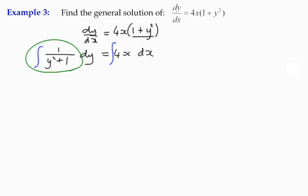So we've got 1 over x squared plus a squared is going to be 1 over a times the inverse tan of x over a. So it's about being able to identify these things. So that's going to give us, a is 1 in this case. So we've got the inverse tan of y on the left-hand side